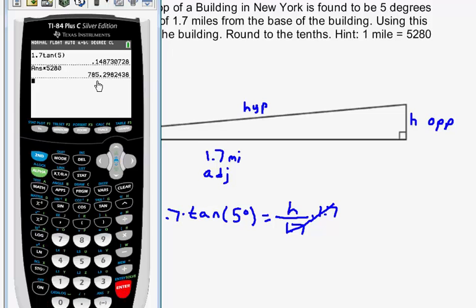So to several decimal places, the answer would be that the building is 785.298 feet. And I'm not sure how to round here as the directions didn't specify, but I would type in this entire answer to get full credit.